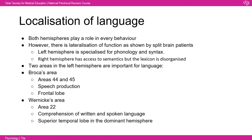By cutting the corpus callosum, you can study each hemisphere independently. If an image is shown in a patient's right visual field — processed by the left hemisphere — the patient can name and report it normally, showing the left is specialized for phonology and syntax. If shown in the left visual field — processed by the right hemisphere — patients report nothing seen but can correctly select or draw the object, showing the right has access to word meaning but a disorganized lexicon, requiring the left for speech production.